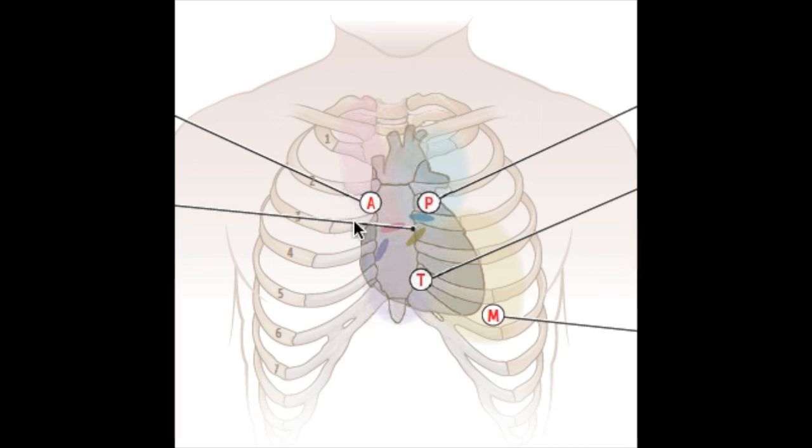As you know, A stands for aortic, P for pulmonic, T for tricuspid, and M for mitral. Now I'm going to go over a little bit about what you'll find in auscultation for each spot.